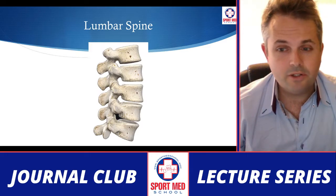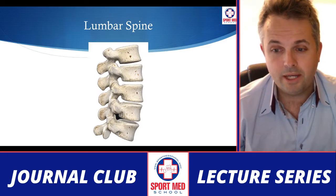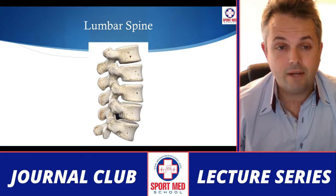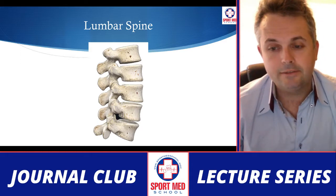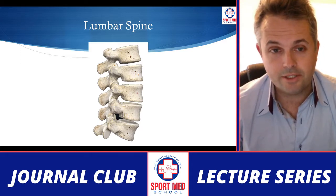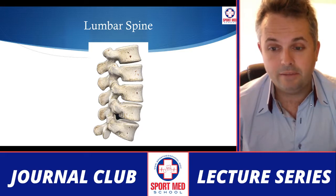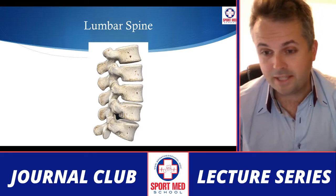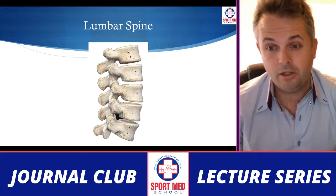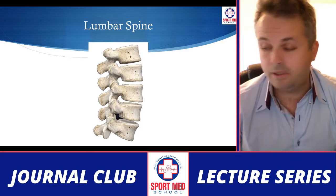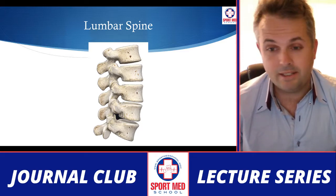Now we're going to move on to the lumbar spine. The basic bony anatomy shows five lumbar vertebrae, L1 through L5, sitting on top of the sacrum. These are oriented slightly differently than the cervical spine — the facets, as opposed to being more anterior-posterior as in the cervical spine, tend to sit more in a sagittal plane in the lumbar spine.